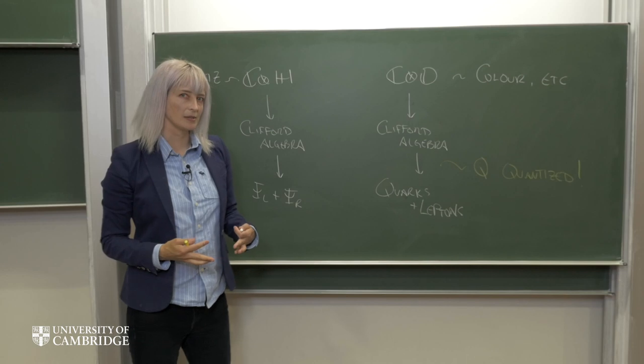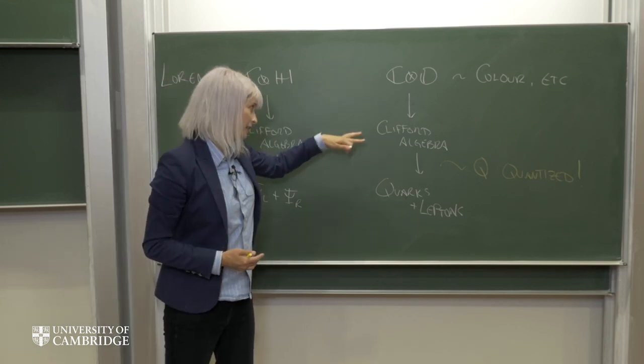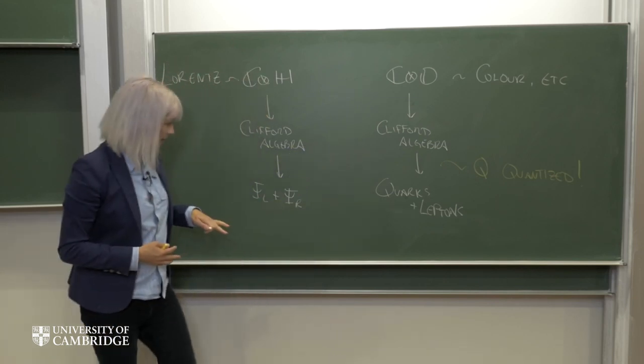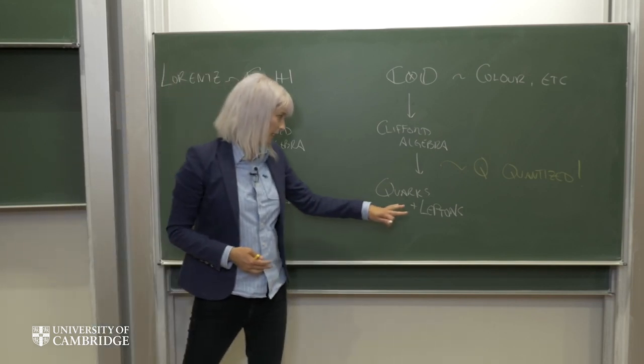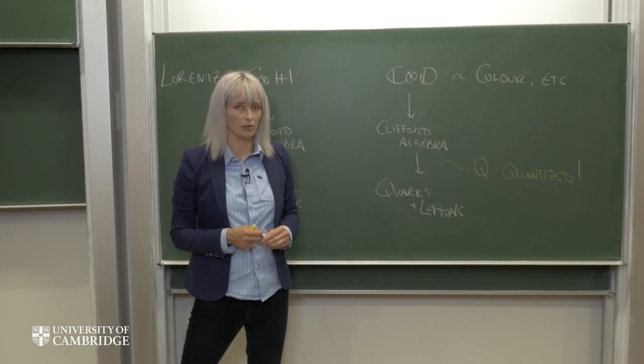Okay, so just to summarize, we're going to start with these algebras. We're going to see that they lead to Clifford algebras. And then we're going to use a spinner construction. In this case, we're going to find that we get left and right-handed Weyl spinners. And in this case, we're going to find that we get one full generation of quarks and leptons under SU3 cross U1.